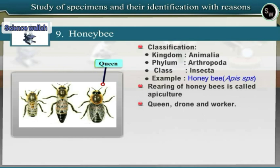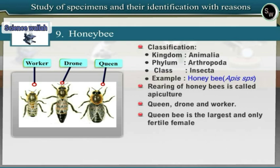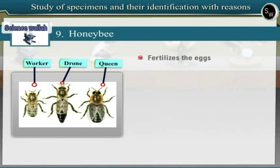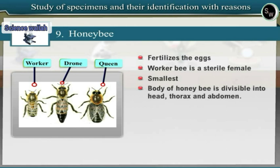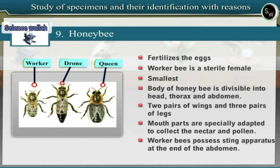The queen bee is the largest and only fertile female bee in the colony — only she is capable of laying eggs. The drone is a male, smaller in size than the queen, and fertilizes the eggs laid by the queen bee. The worker bee is a sterile female and the smallest among all bees. The body of a honeybee is divisible into head, thorax and abdomen, with two pairs of wings and three pairs of legs. Mouth parts are specially adapted to collect nectar and pollen. Worker bees possess a sting apparatus at the end of their abdomen. Honeybee is a social insect showing well-coordinated division of labor in the hive.